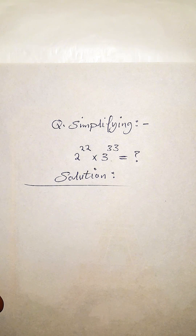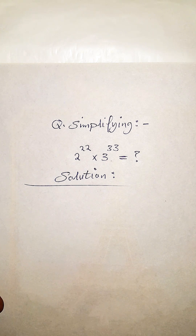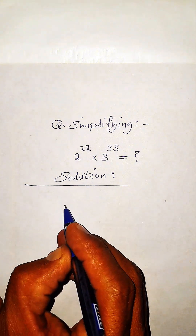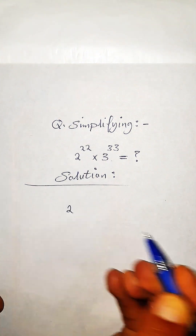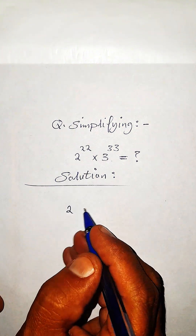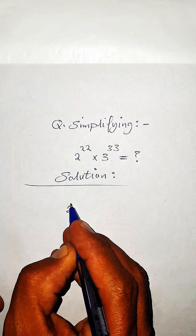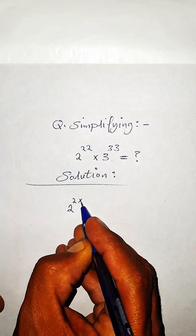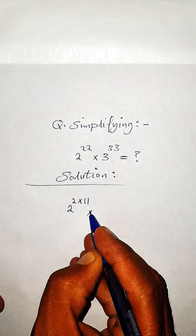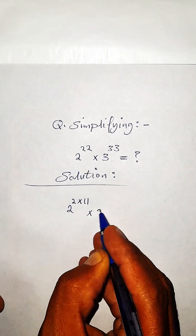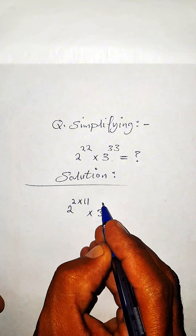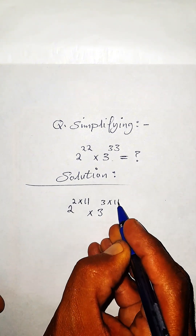2 to the power of 22 times 3 to the power of 33. How to simplify it? For simplification, we have 2 to the power of — instead of 22 — 2 times 11, times 3 to the power of 3 times 11.